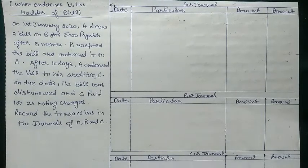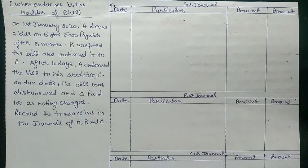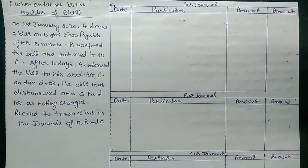Good morning students. In our last video we discussed the dishonor of a bill — we covered a number of cases. In the last video we had two cases: when the drawer is the holder of the bill, and when the drawer is not the holder and the bank is the holder. Today we will have our third case on dishonor of a bill, that is when the endorsee is the holder of the bill. Endorsee means the third person to whom the drawer endorses the bill.